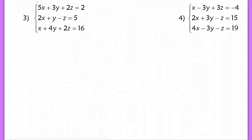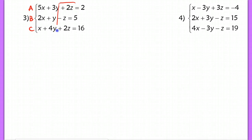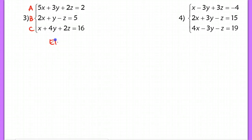In problem 3, label the lines A, B, and C again. I could eliminate x, y, or z, but I'm going to choose something easier — I'll eliminate z, because I already see two z's, and I can eliminate that by just multiplying line B by 2. So we're going to take line A and add 2 times line B to eliminate the z.